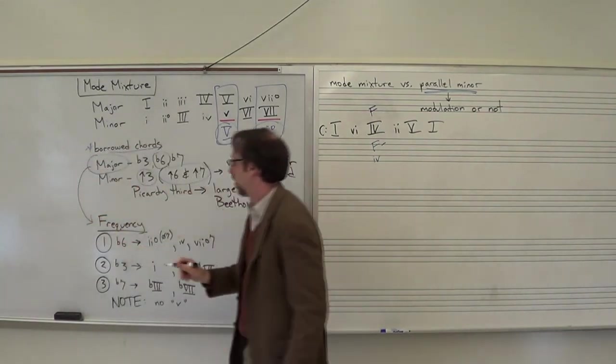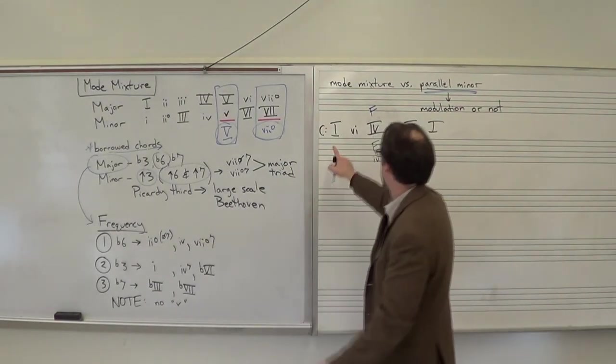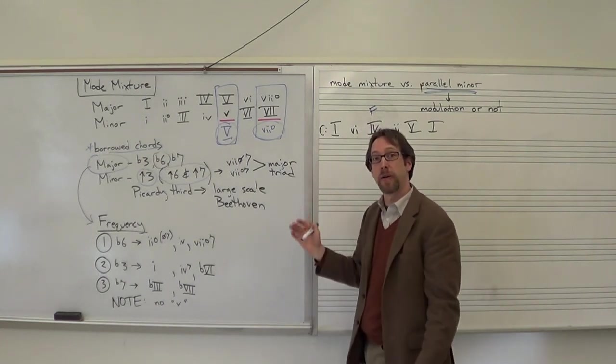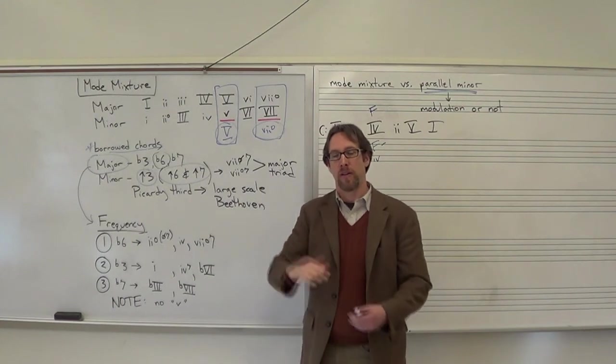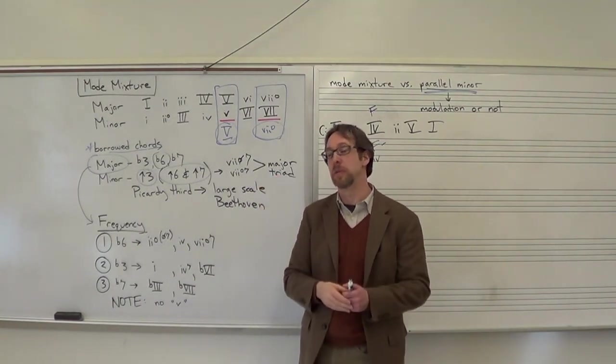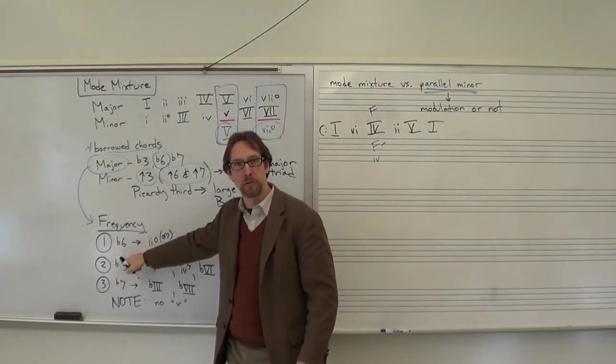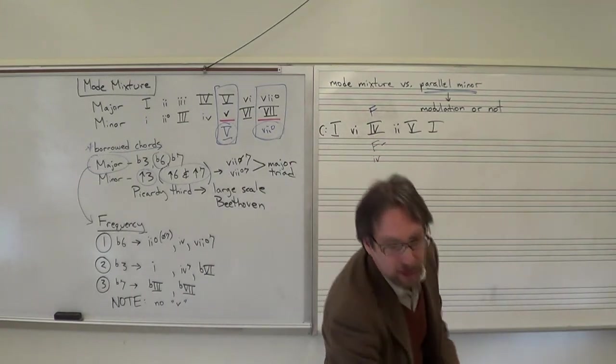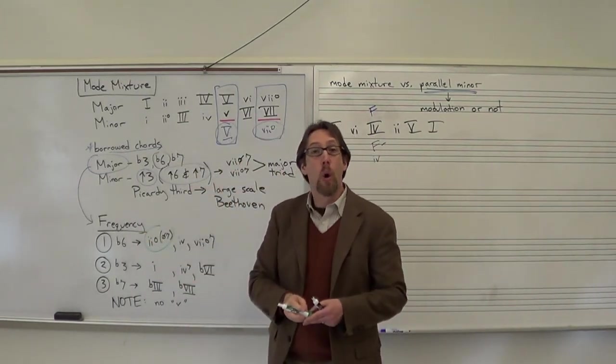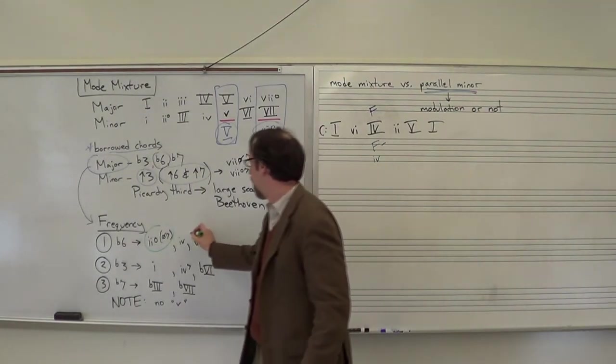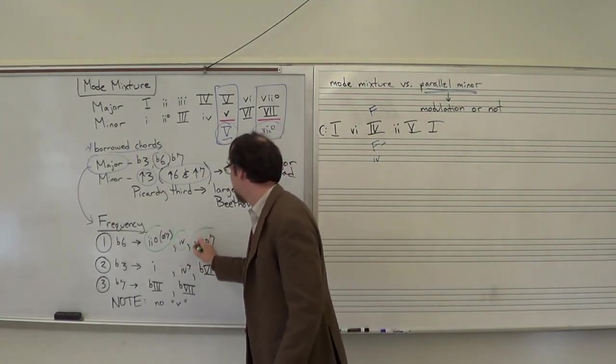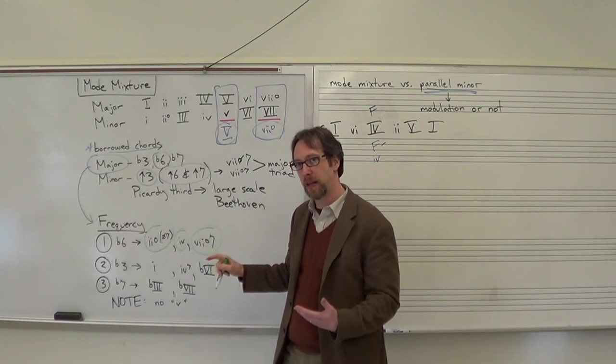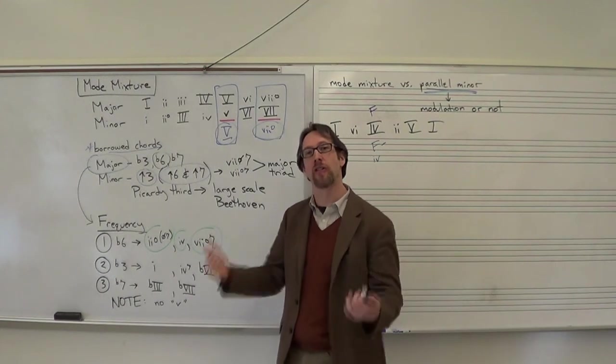Four, frequency. Because again, mode mixture is a little bit unusual. Our traditional progression, one, six, four, two, five, one, this is very much expected. If we start using any mode mixture in there, that's going to be a little unusual. But even when we're using mode mixture, there's three distinct levels of how common you find this in music. The first level uses that lowered scale degree six that I was just talking about. And if you do that, if you use the lowered scale degree six, you now have access to a two-diminished triad or two-half-diminished seven, either one. You have access to the minor four chord that I just demonstrated for you. And you also have access to the seven-diminished seven.